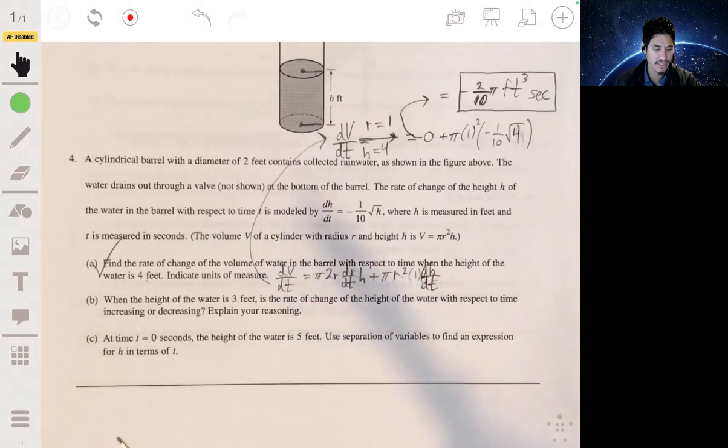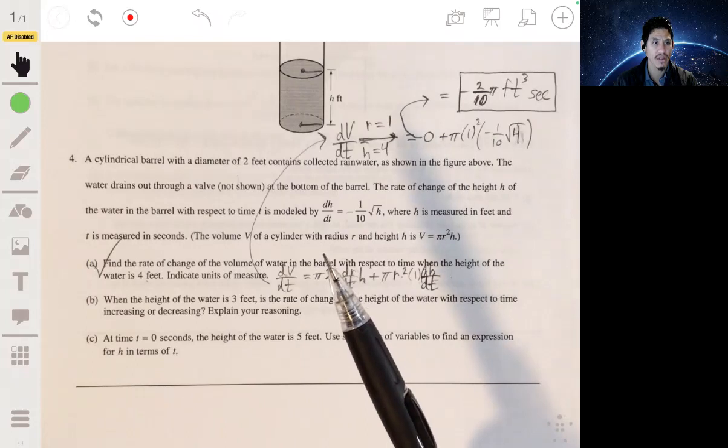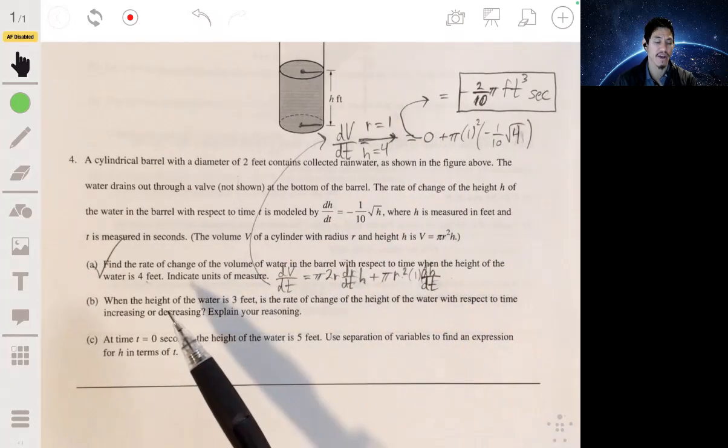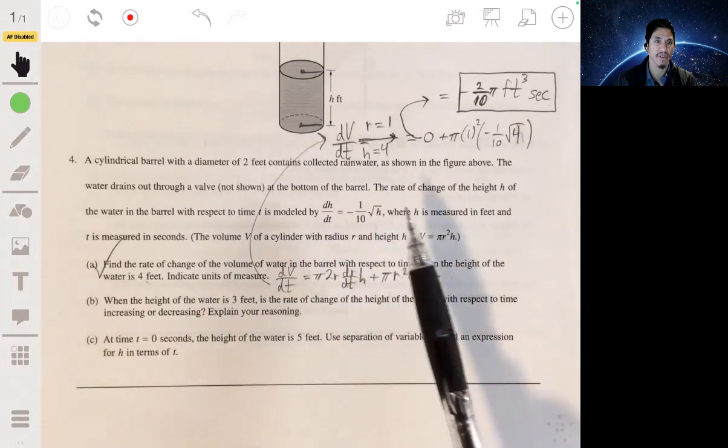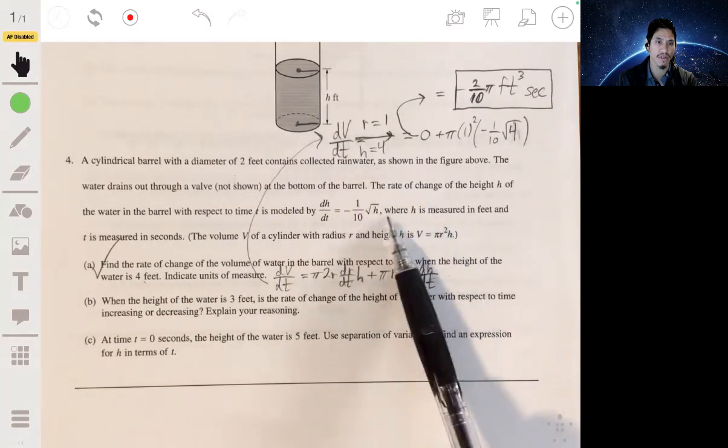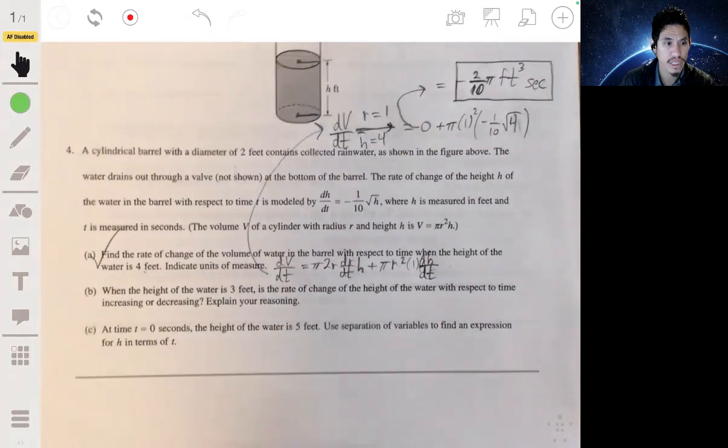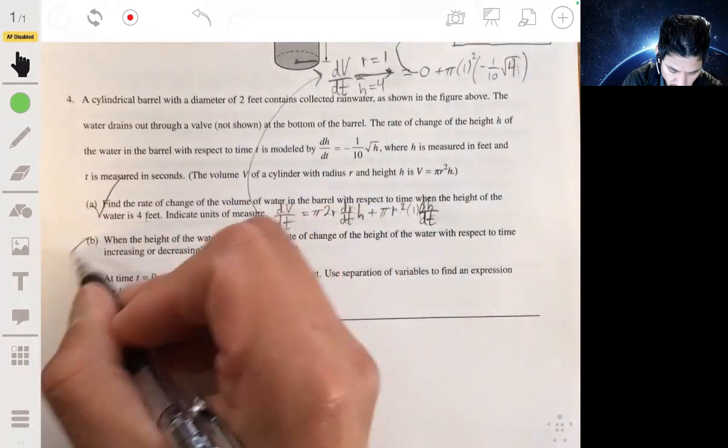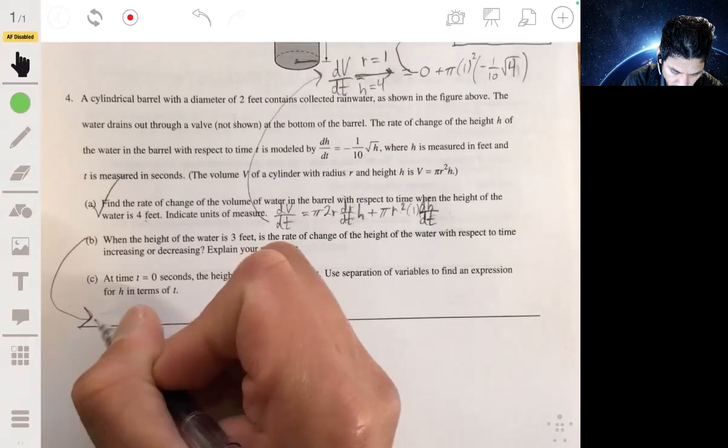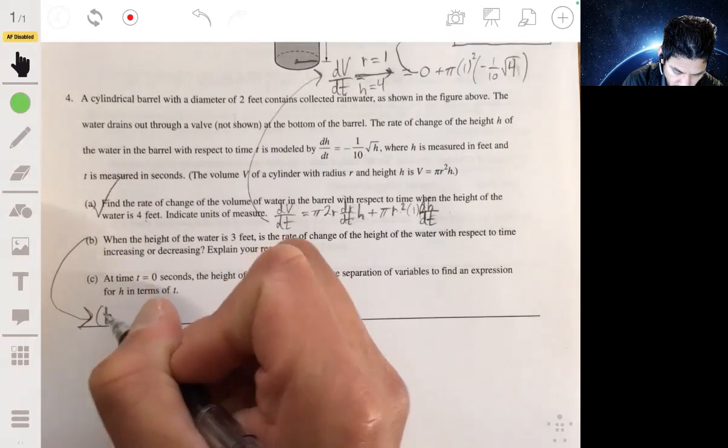you're finding the derivative of the rate of change, which is essentially the second derivative in terms of height, of how height is changing. So you're finding the derivative of the derivative or the derivative of this one. So let me squeeze part B over here. By squeeze, I mean fitted nice and neatly.